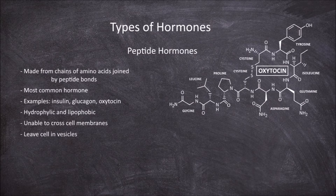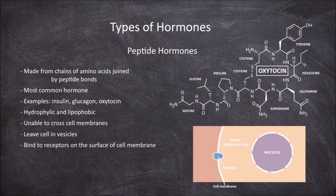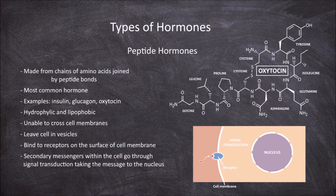But they are unable to enter a cell on their own. Instead they bind to receptors on the surface of the cell. This receptor initiates a series of molecules within the cell called secondary messengers, in a cascade effect that then initiates cell activity in response to this hormone. This process is called signal transduction.